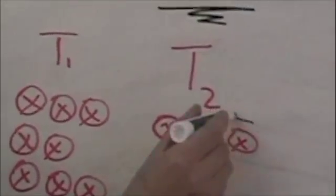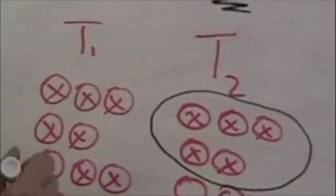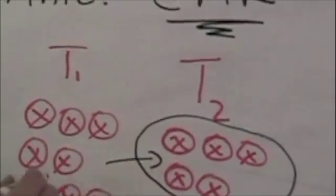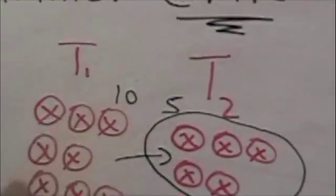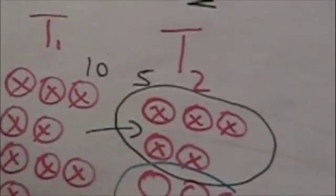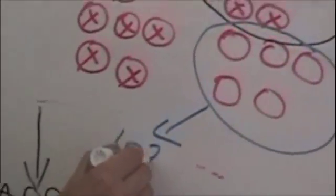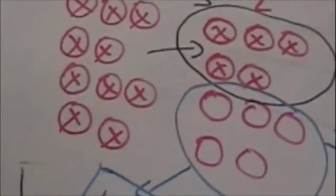And this is the big assumption here. This is the leap of faith. What capture mark recapture says is if these five come from a population of ten, then the other five, the five new ones, they also should represent a population of ten.